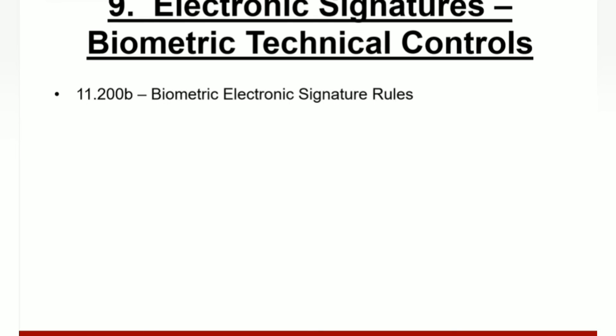Section nine applies when the system uses biometric signatures; you complete sections four and five plus this section for electronic signature biometric technical controls. For 11.200B, biometric controls must be designed to ensure that only their genuine owners can use them. Biometric controls must not rely on repetitive actions alone, such as typing an ID code and password or writing a signature on an electronic stylus pad, unless additional identifying factors are also used.